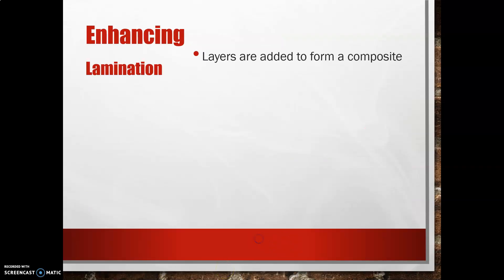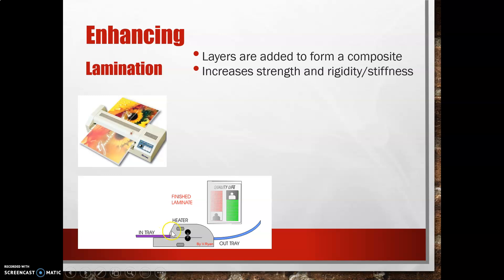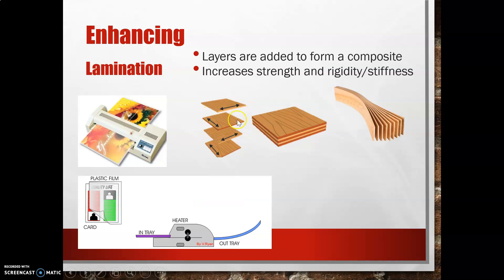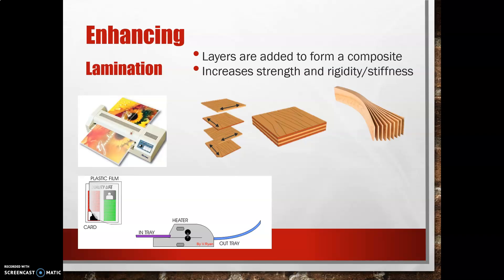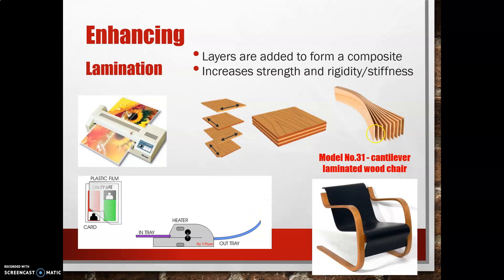Lamination is our first way to create a composite — layers are built up, which increases strength and rigidity. We can do this with paper by encapsulating it inside plastic sheets, passing it through a heated roller in a laminator, and the plastic makes it much more rigid. We can also do this with woods and boards — with plywood, we lay the grain at 90 degrees in each direction and build up the layers, giving much greater rigidity. A lovely example is one of the first plywood chairs, made in the 1930s — revolutionary at the time, commonplace nearly 100 years later.